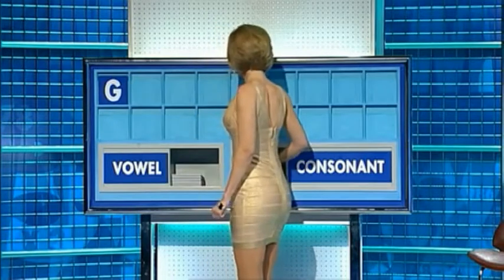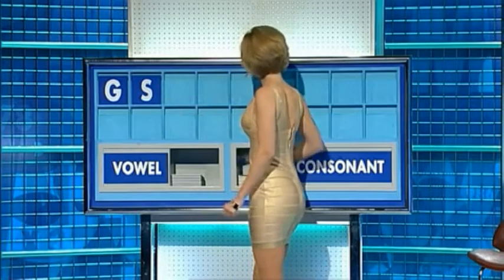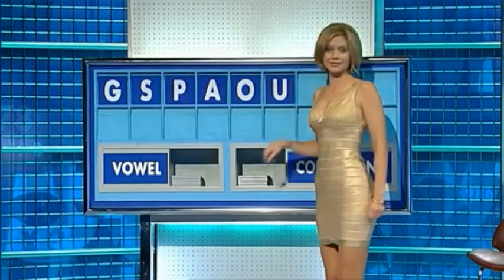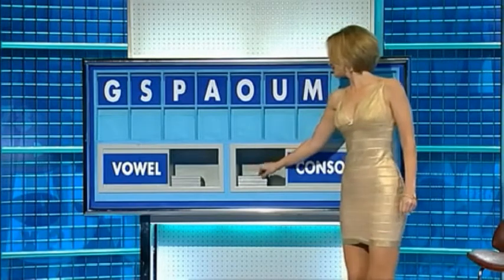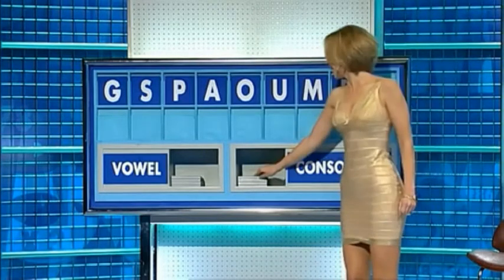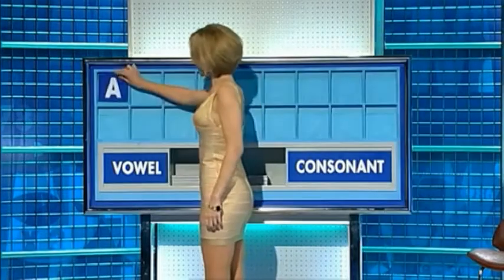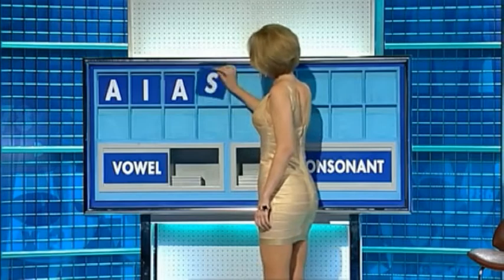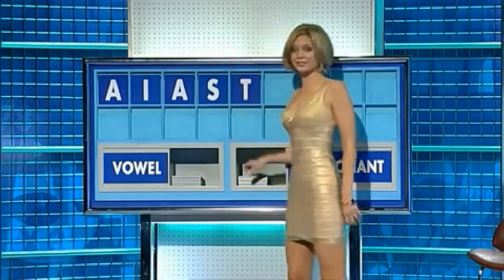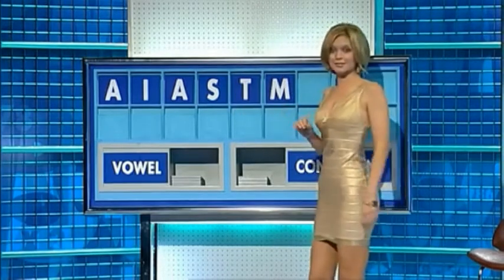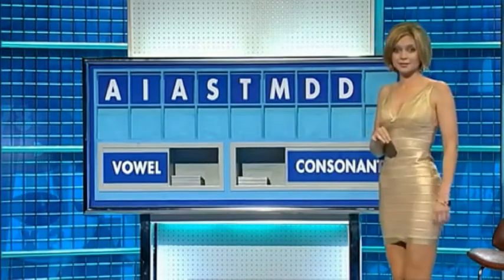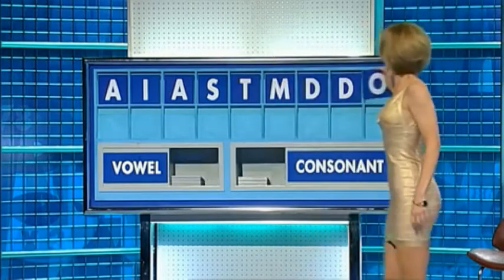And another. S. And a third. P. And a vowel, please. A. And another. O. And a third. U. And a consonant, please. M. And another consonant. A. And another consonant, please. W. O. A. And another. I. And a third. A. A consonant, please. S. And another. T. And a third. M. A fourth, please. D. And a fifth. Another D. And a final vowel, please. And a final O. Thank you, Jack.